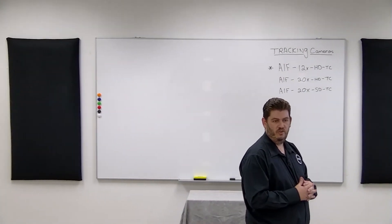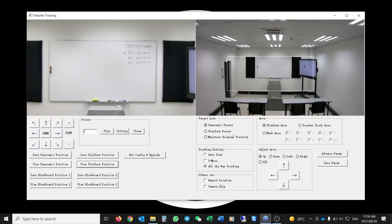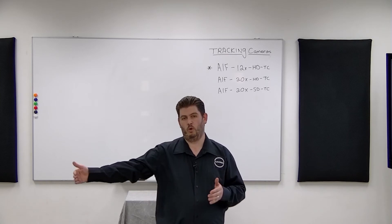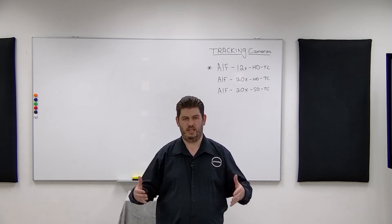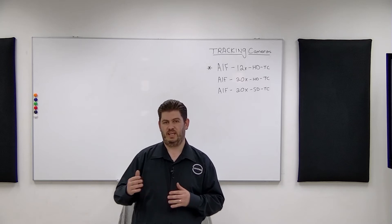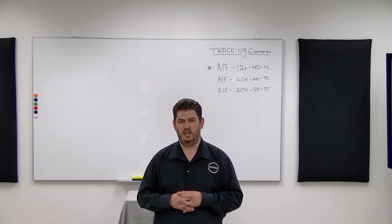If I move over to the other side, it should follow me quite nicely — all the way while I'm inside the tracking area we've set up for the camera. If the camera loses target — if I walk out of the tracking area, which we'll show in the software in just a moment — the camera will return back to a wide view that we've preset.